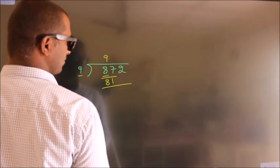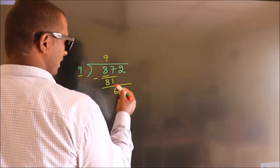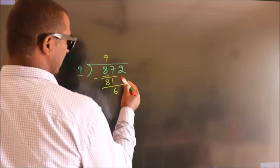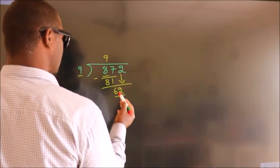Now we should subtract, we get 6. After this, bring down the beside number. So 2 down, which gives us 62.